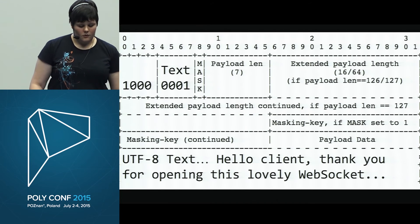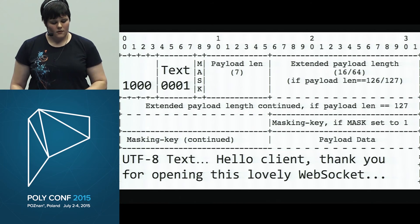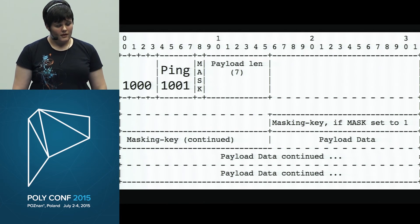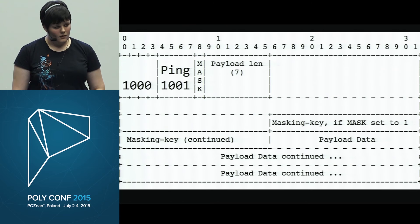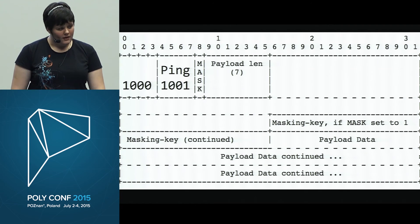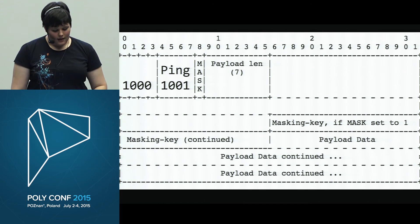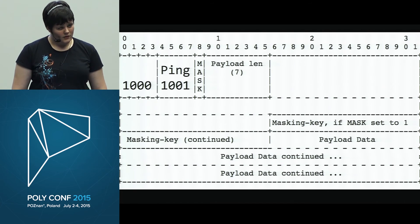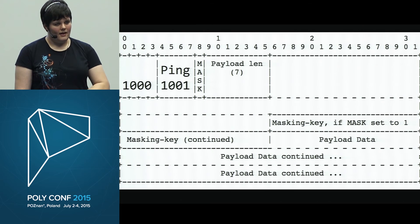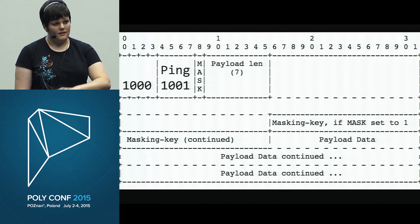We can also send control frames. Here is a ping frame. Control frames can never be fragmented, so the FIN bit is always 1. The opcode is 9 for ping. Control frames can have data but no more than 125 bytes, so you never use the extended length for control frames. For ping, if you include data, the pong responding to it must copy-paste that same data back, so you can identify which ping is being responded to.